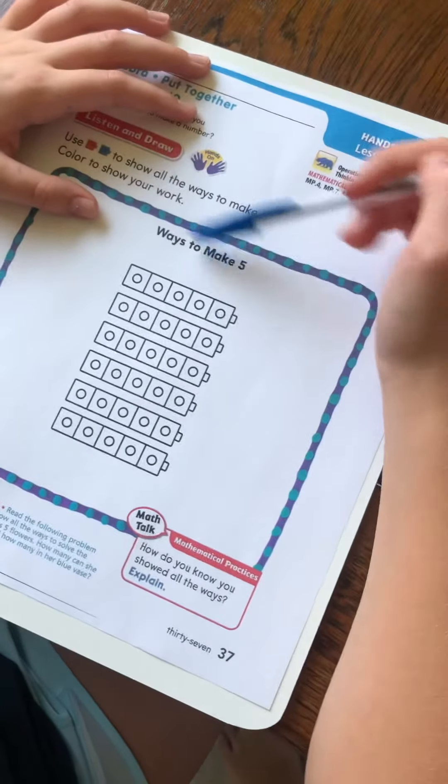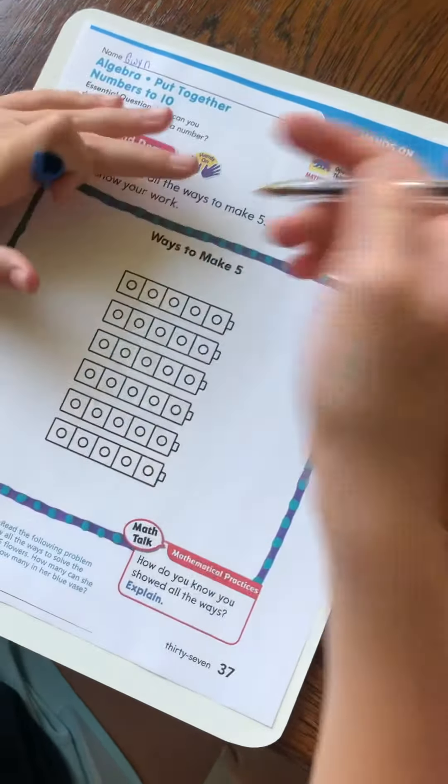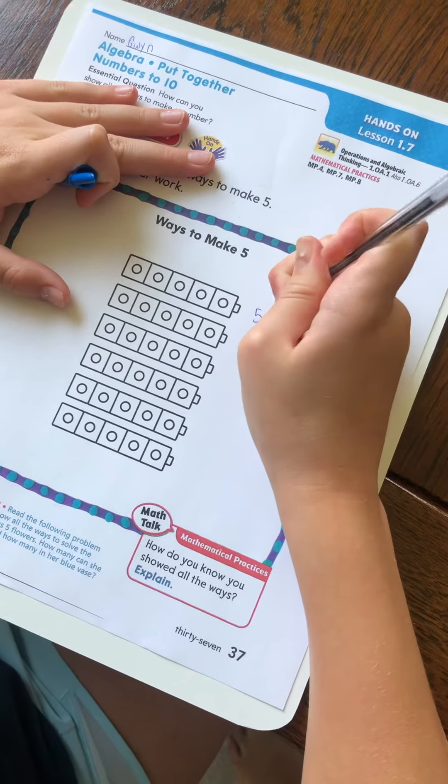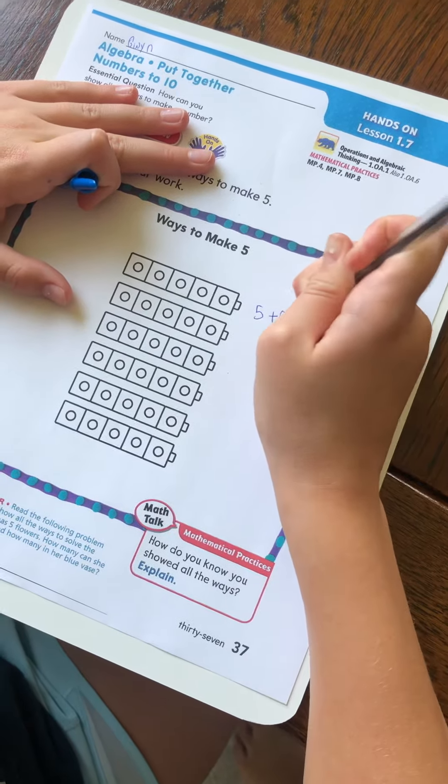For this one I'm actually gonna color in no blocks because I could just do 5 plus 0 equals 5.